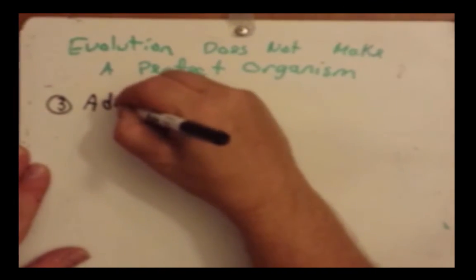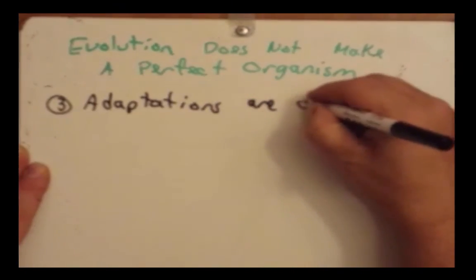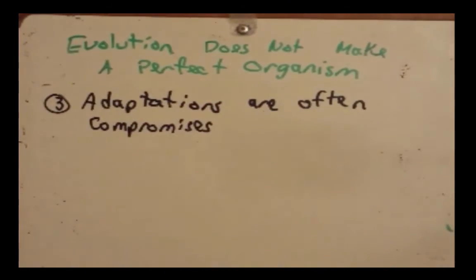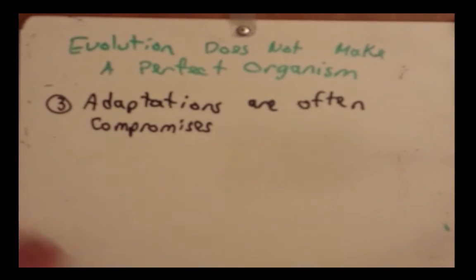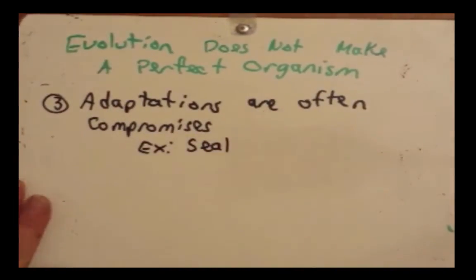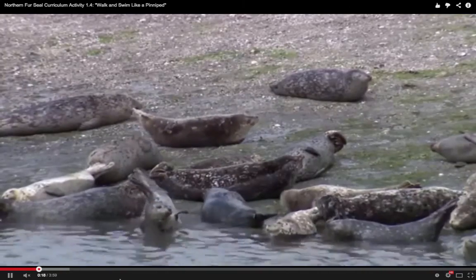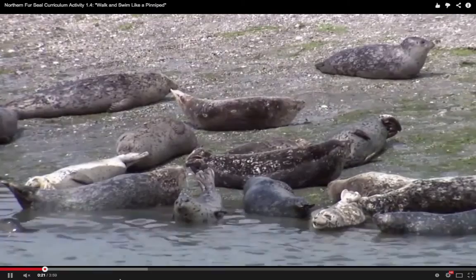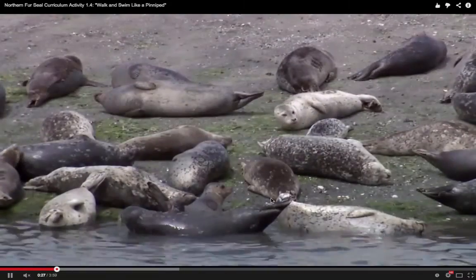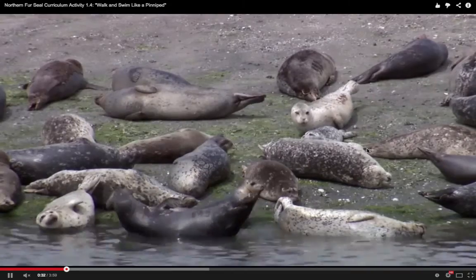The third reason is that adaptations are often compromises. Our example here is going to be a seal. Here's a pretty good example of watching a seal walk on land — they're not very good at it. They can hardly use their limbs; they just kind of use their belly to move from place to place, so it's not very efficient at all.